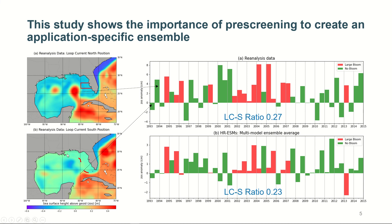Here, this is loop current in the south position, shown by these arrows, and this is loop current in the north position, shown by these positive bars. When loop current is in the south position, you see it's all green — no bloom occurred. When loop current is in the north position, that's the necessary condition for red tide to occur, so it could be green or red. That's from reanalysis data. The loop current north-to-south ratio is about 2.7 to 1, about one-fourth south.